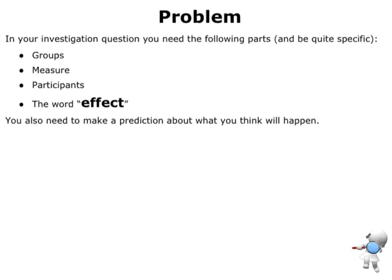When we write our investigation question, these are the things it needs to have. We need to know what our groups are — what's the treatment and what's the control. What is it that we are measuring? Am I measuring a test mark, the time it takes to do something, or the rating somebody gives to my food? And who are my participants — who are the people that I'm actually going to do the experiment on?